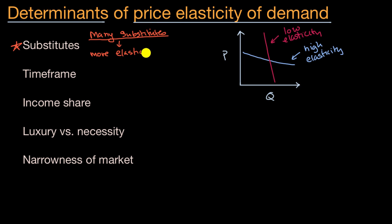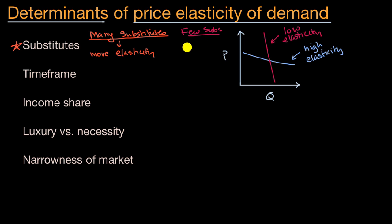More elasticity — quantity would be very sensitive to price. You could go the other way around: if you have few substitutes, then even if the price changes a little or a lot, people say they don't know what they could substitute it with. So they might still buy a reasonably similar quantity. This would be less elastic.